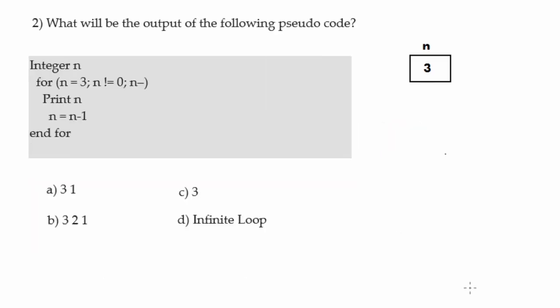Moving to the next question: we have integer n, initialized to 3 inside a for loop. We test the condition n not equal to 0 — since n is 3, the condition is true. We print n, so 3 is displayed. Then n equals n minus 1, so n becomes 2. Due to the decrement statement n is again decremented by 1, becoming 1. We check n not equal to 0 again — true — so we re-enter the loop.